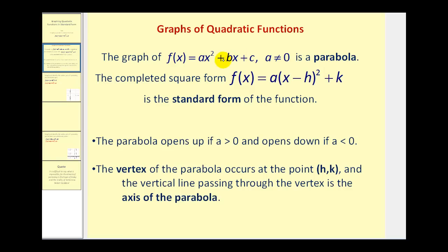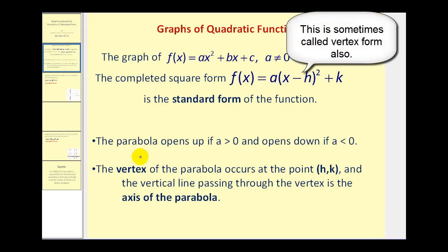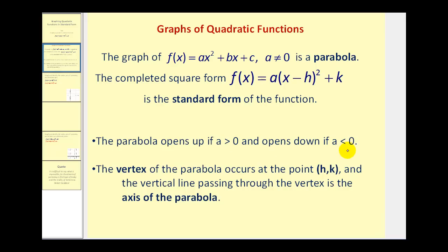If we take general form and complete the square on the right side, we get standard form: f(x) = a(x - h)² + k. What's nice about standard form is we can tell a lot about the graph just by looking at the function — if a is positive the parabola opens up, and if a is negative it opens down.